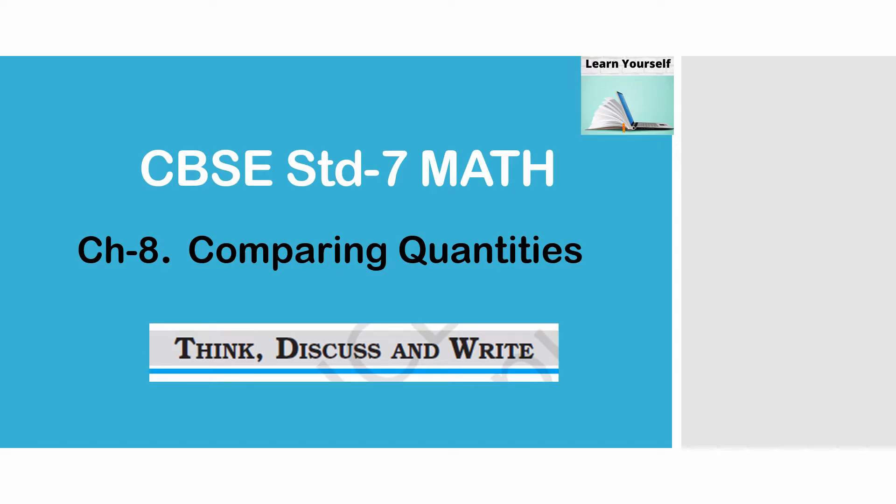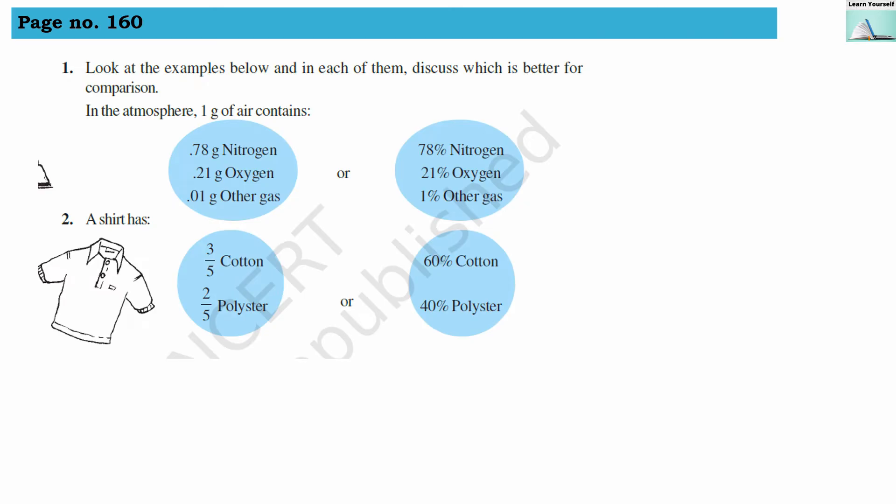Welcome to Learn Yourself: Think, Discuss and Write, page number 160. Look at the examples below and in each of them, discuss which is better for comparison. In the atmosphere, 1 gram of air contains 0.78 gram nitrogen, 0.21 gram oxygen,